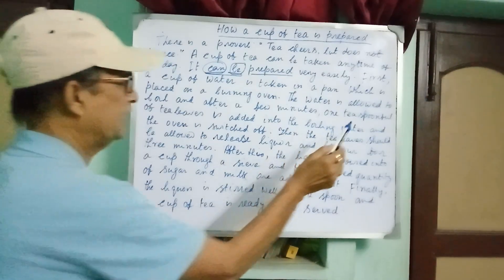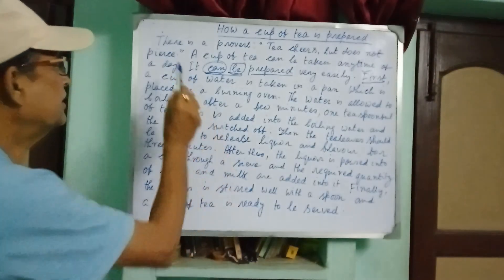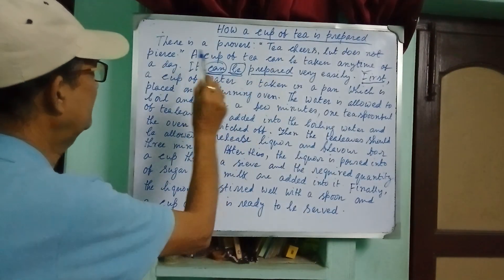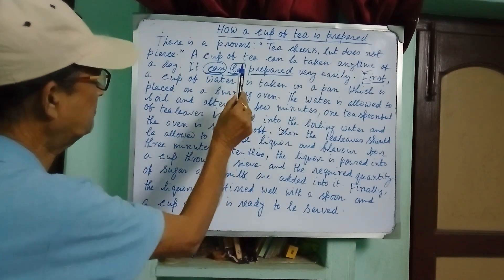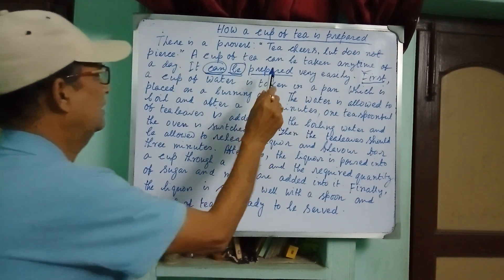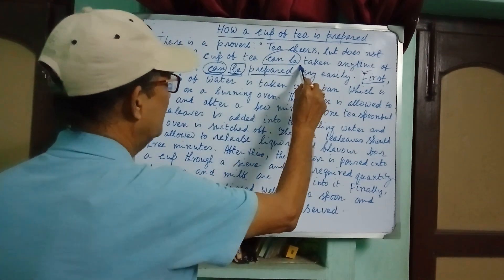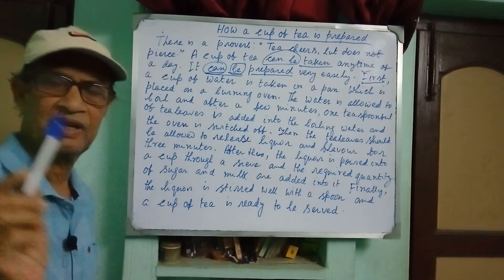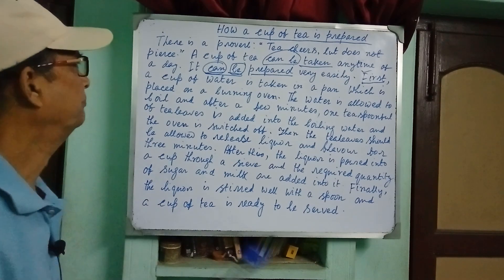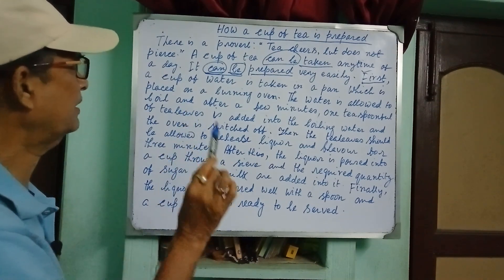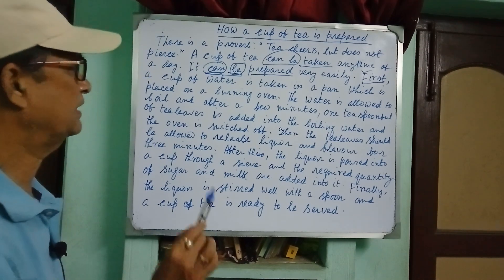Note that 'first' is actually a linker. This is the introduction: there is a proverb — tea tears but does not pierce. A cup of tea can be taken any time of a day — 'can be' is modal and 'taken' is the past participle form of 'take,' making it modal passive. It can be prepared very easily.